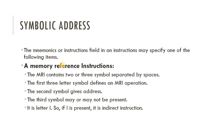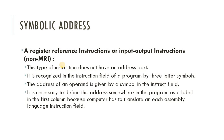If the instruction is a memory reference instruction and the third symbol is present and it is 'I', it indicates that it is an indirect instruction — meaning indirect addressing. If the third symbol is not present, we consider the addressing method to be direct addressing. Next are register reference instructions or input-output instructions.